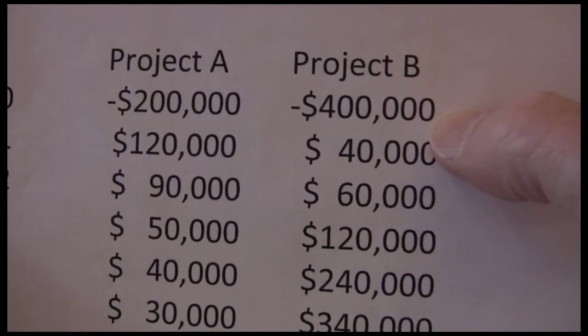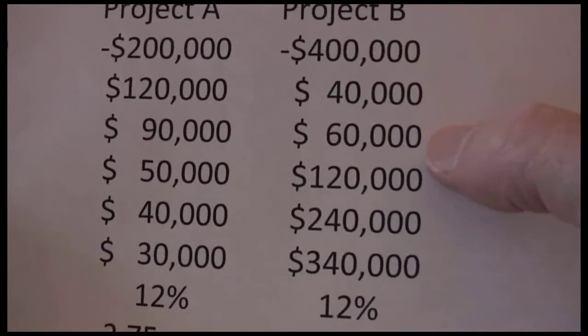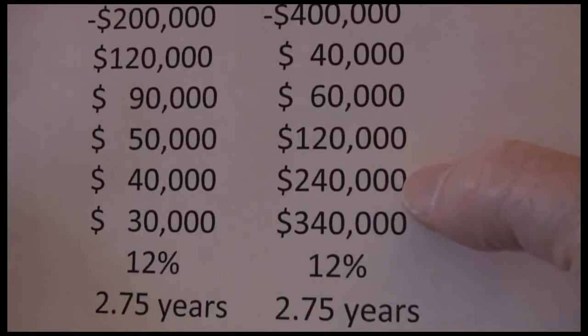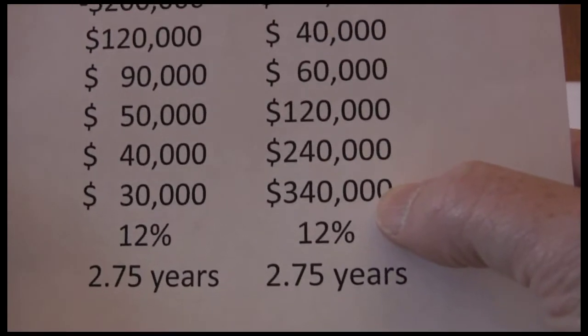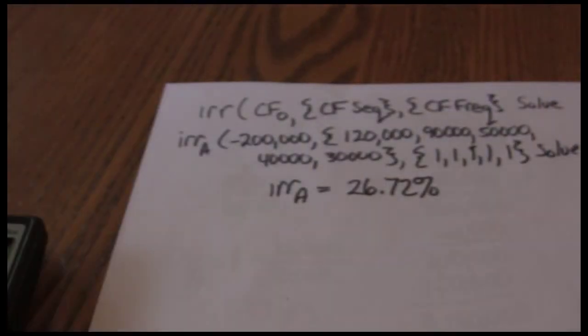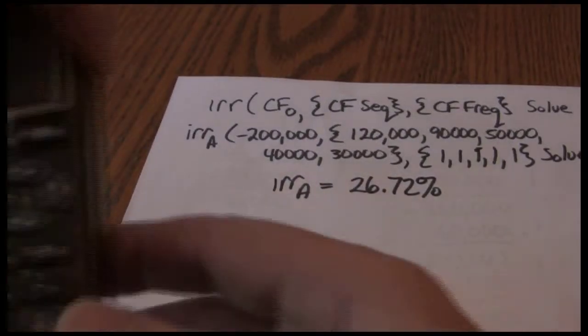400,000 negative is our CF zero. 40,000, 60,000, 120,000, 240,000, 340,000 are our cash flows. Our sequences are ones. Solve.